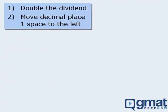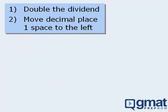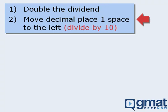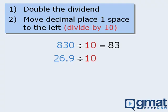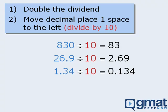Now to understand why this technique works, you first need to recognize that moving the decimal place one space to the left is exactly the same as dividing a number by 10. For example, to divide 830 by 10, we just move the decimal place one space to the left to get 83. Similarly, 26.9 divided by 10 is equal to 2.69. And 1.34 divided by 10 is equal to 0.134. In every instance, dividing by 10 is exactly the same as moving the decimal place one space to the left.